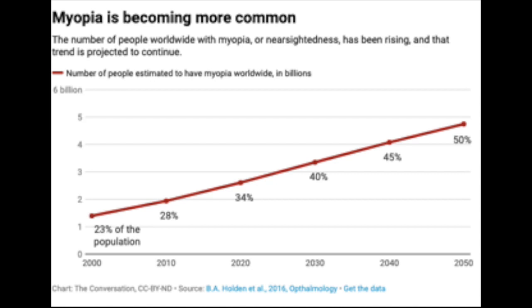The increase in screen time is slowly leading to a condition called myopia, or increased minus power. Looking at the statistics, in the year 2000 myopia incidence was just 23%, today it's about 34% of the population, and by 2050 it's going to be about 50% of the world's population. In other words, every second person you meet will have minus power.